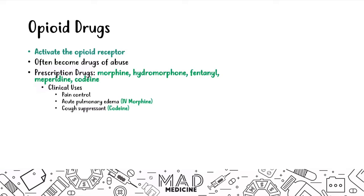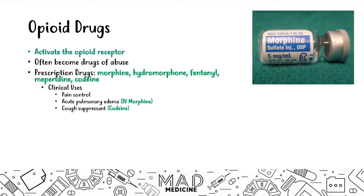Codeine is very commonly overdosed on and abused. These are your main prescription opioids — drugs that people get prescribed and then abuse.